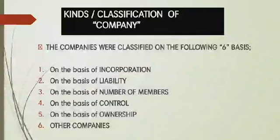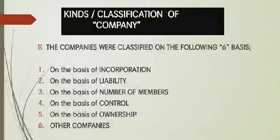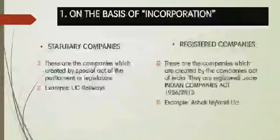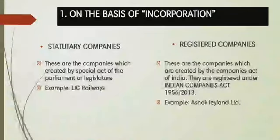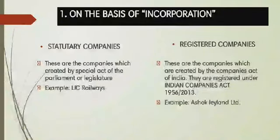Companies are classified on the following six bases: on the basis of incorporation, liability, number of members, control, ownership, and other companies. On the basis of incorporation or registration, a company is classified into two types: statutory companies and registered companies.